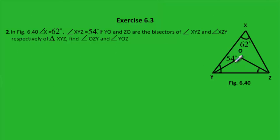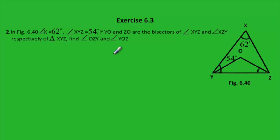In figure 6.40, angle X is given equal to 62 degrees and angle XYZ is equal to 54 degrees. If YO and ZO are the bisectors of angle XYZ and angle XZY of triangle XYZ, we need to find angle OZY and angle YOZ.